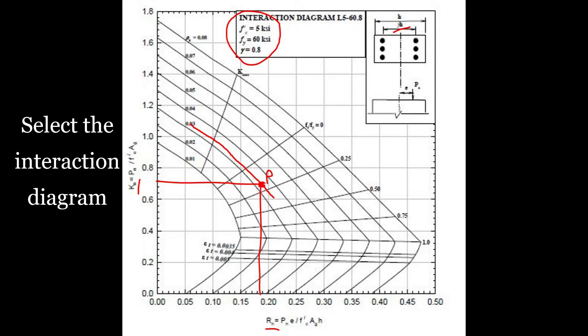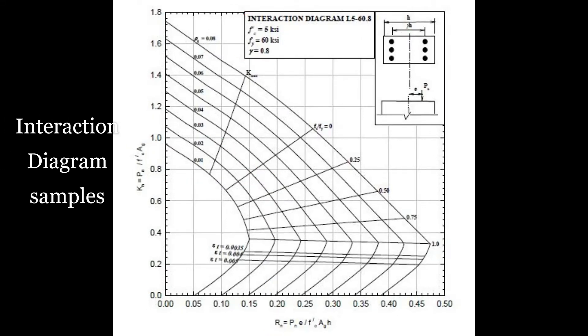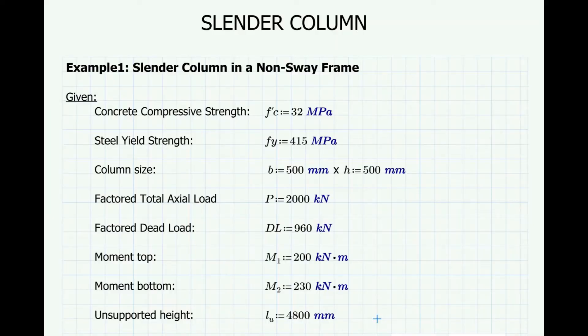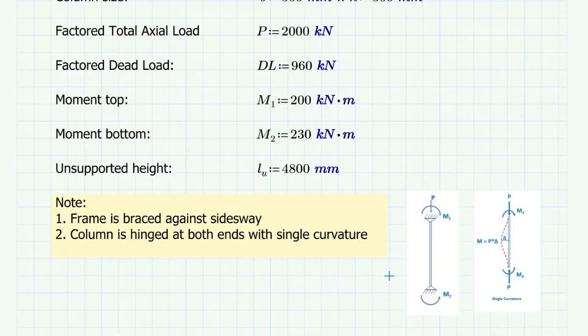Note that you have to select the interaction diagram that matches the gamma value of the material strength of the column in design. Let's look at this example for a slender column in a non-sway frame. The material properties, column size, and height are given. The factored loads and factored end moments are also given. The frame is braced against sidesway, so it's a non-sway frame.